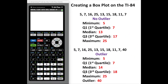How to go about creating a box plot on the TI-84. I am going to do two examples: one that does not have an outlier and then one that does have an outlier. Once you create this box plot, you can then find the five number summary.